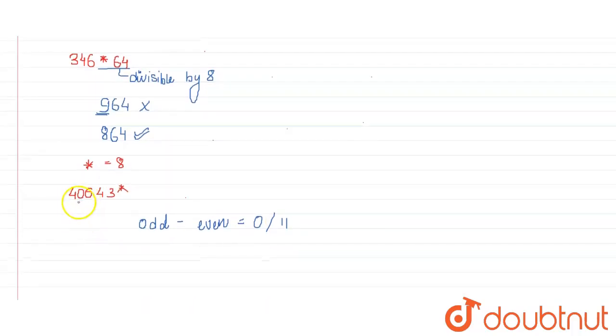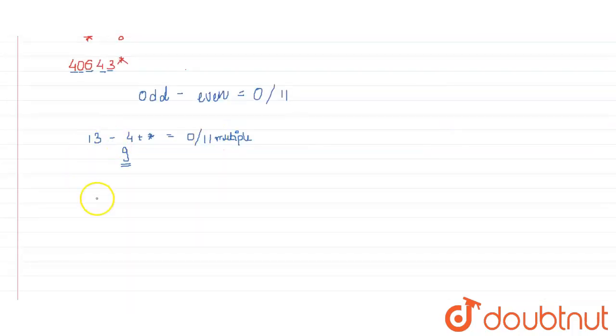Adding all the odd digits: 4 plus 6 is 10, plus 3 is 13, and then all the even digits: 0 plus 4 plus asterisk equals 4 plus asterisk. This should be either 0 or a multiple of 11. If we subtract 4 from 13, we get 9, and 9 is the biggest digit. So the value of asterisk will be 9.